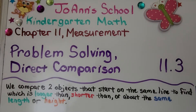Lesson 11.3: Problem Solving - Direct Comparison. We compare two objects that start on the same line to find which is longer than, shorter than, or about the same length or height.